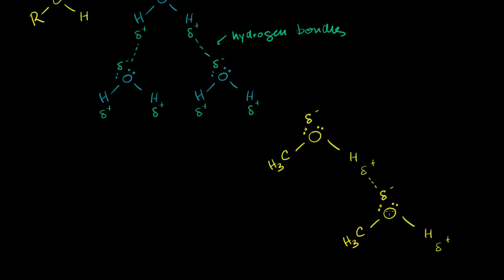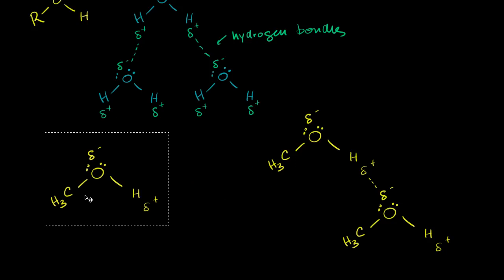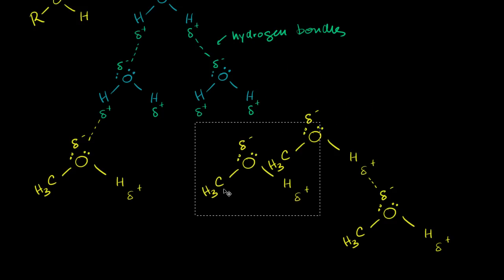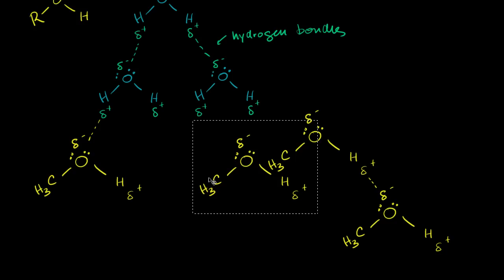Because methanol can form hydrogen bonds and has this slight polarity — and water obviously has hydrogen bonding — methanol is actually miscible in water. That means it's soluble in water in any proportion, no matter how much methanol or water you have. A methanol molecule will hydrogen bond with a water molecule, which is what allows methanol to be soluble in water.